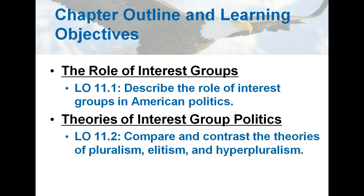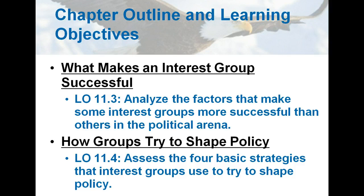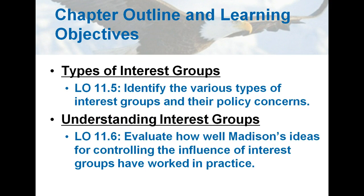We're going to describe the role of interest groups in American politics. We're going to compare and contrast the theories of pluralism, elitism, and hyper-pluralism. We're going to analyze the factors that make some interest groups more successful than others, assess the four basic strategies that interest groups use to shape policy, identify the various types of interest groups and their policy concerns, and evaluate how well Madison's ideas for controlling the influence of interest groups have worked in actual practice.